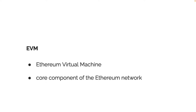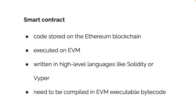The EVM is the Ethereum virtual machine, the core component of the Ethereum network. A smart contract is just code that is stored on the Ethereum blockchain and the code is executed on the EVM. A smart contract is usually written in a high-level language like Solidity or Viper. These high-level languages need to be compiled into EVM executable bytecode because the EVM doesn't understand Solidity — it only understands bytecode.